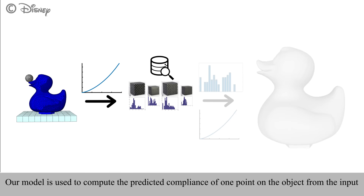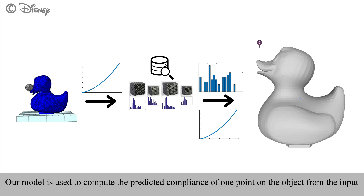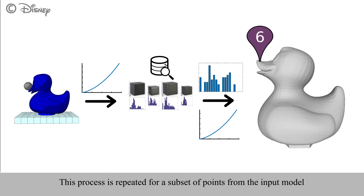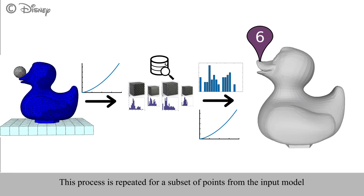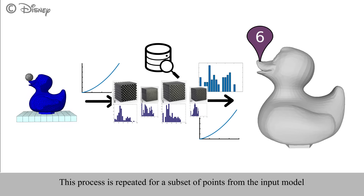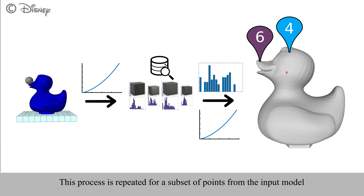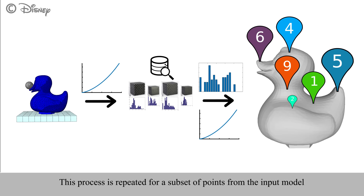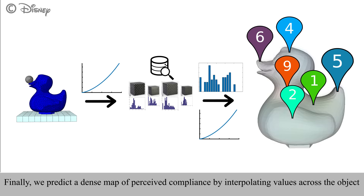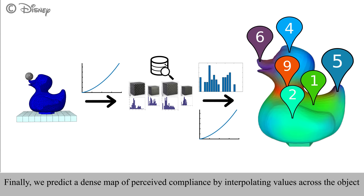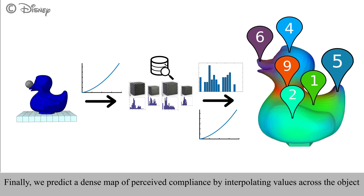A few closest curves are selected and their histograms are interpolated. Our compliance model is then used to predict the perceived compliance of one point from the input object. We repeat this process for a sampled set of points on the input object, and by interpolating the computed values, we create a dense map of predicted compliance properties.